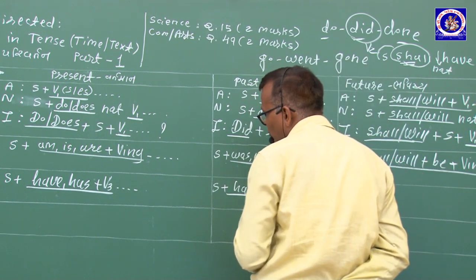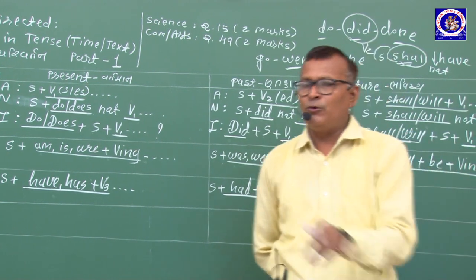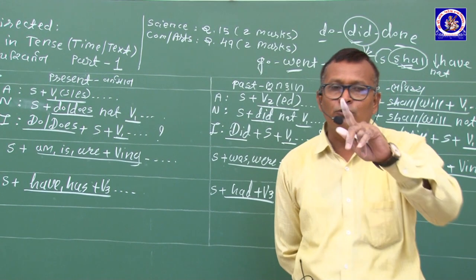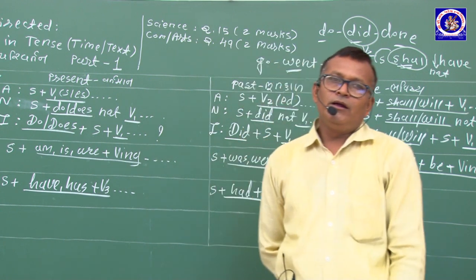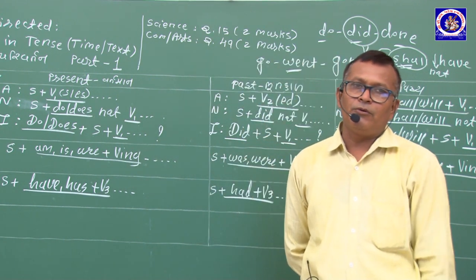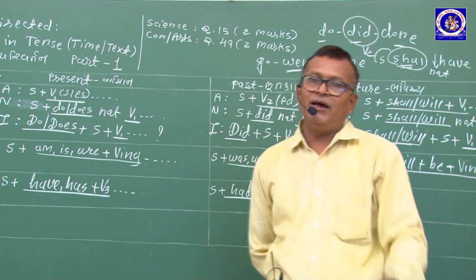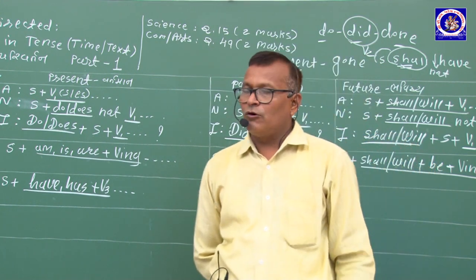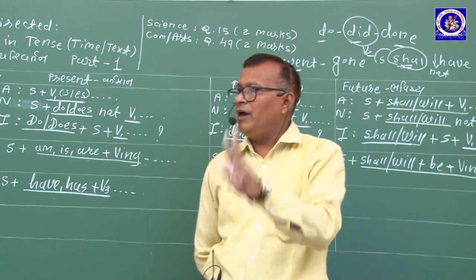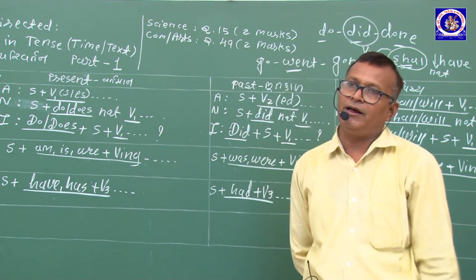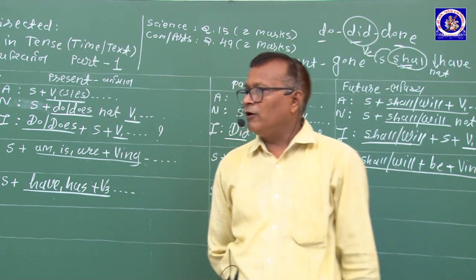Past Perfect Tense — પૂર્ણ ભૂતકાળ: ભૂતકાળમાં બે ક્રિયા, પહેલાં થઈ = had + V3, પછી = Simple Past. Signal: by the time, before, after. ભૂતકાળ-no ભૂતકાળ. Negative: had + not + V3. Interrogative: Had + Subject + V3 + ?